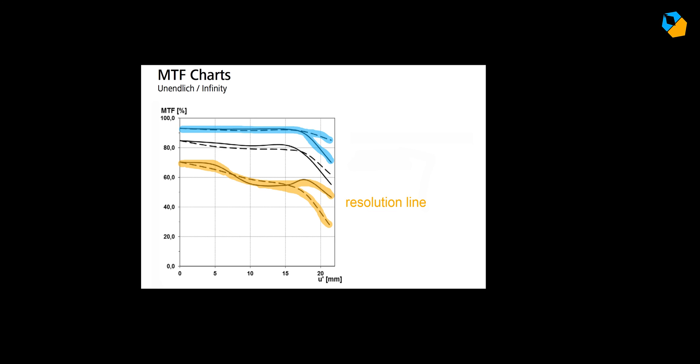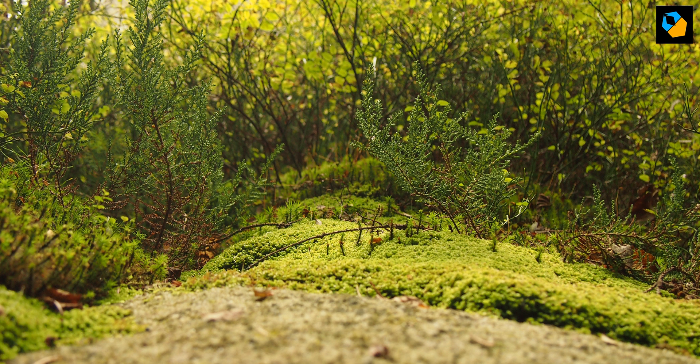Next, you'll notice most MTF charts have two pairs of lines. What's the other one for? There's another kind of stress test possible, and that's testing for edge contrast, or acutance. Think leaves in a forest. Can the lens tell each leaf apart? Can it draw the edge correctly so we can see each leaf separately? That's acutance.